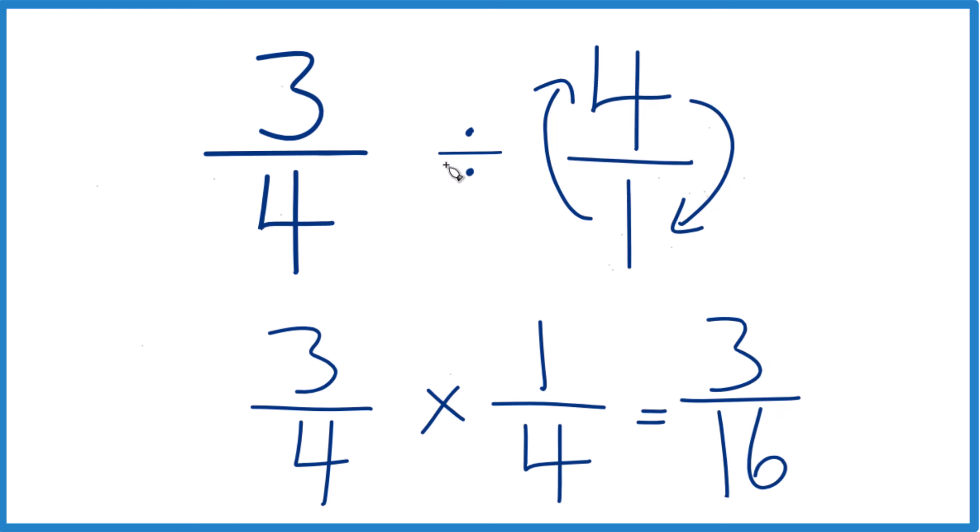So in answer to our question, 3 fourths divided by 4, or 3 fourths times 1 fourth, you get 3 sixteenths.